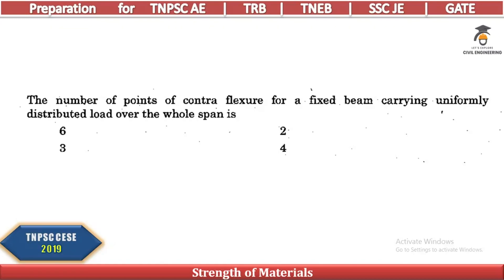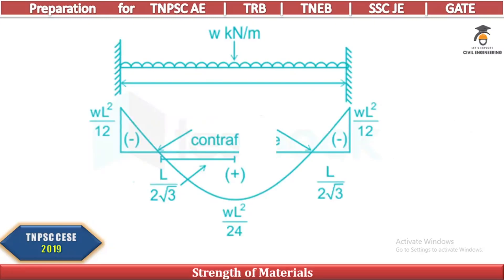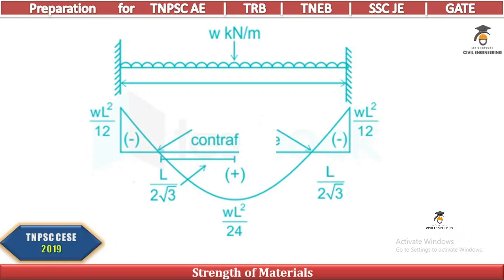The number of points of contraflexure for a fixed beam carrying a uniformly distributed load over the whole span — considering the bending moment diagram — the answer is two points of contraflexure.